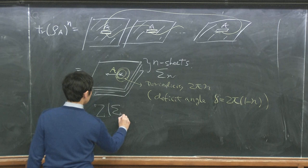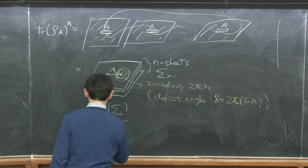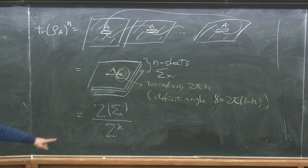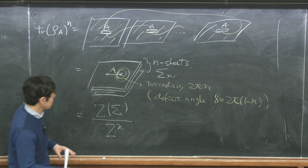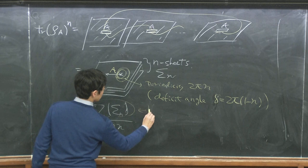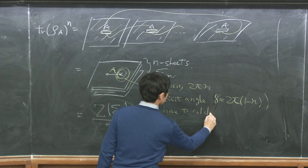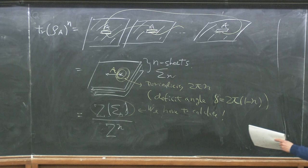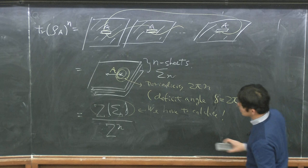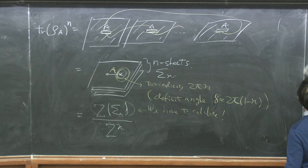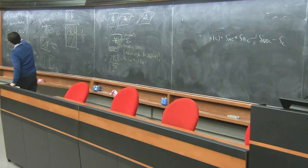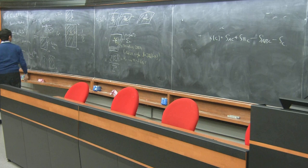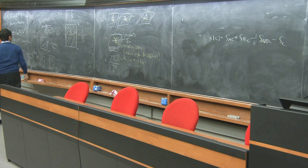This is the main quantity to compute: the partition function on the n-sheeted surface. Once we compute it and analytically continue in n, we can take the derivative ∂/∂n and the limit n→1 to get the von Neumann entropy S_A = −tr(ρ_A log ρ_A). This is called the replica trick.